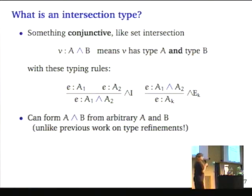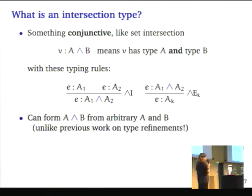What is an intersection? It's something conjunctive like set intersection. If we say that v has type A intersect B, we're saying it has type A and type B. The introduction rule says that if e has type A1 and type A2, then it has the intersection. In the elimination rule, if you know that e has an intersection type, then you know that it has either one of those types, so the K here is existential. Unlike a lot of previous work, we can form the intersection of arbitrary types even if they have no particular relation to each other.